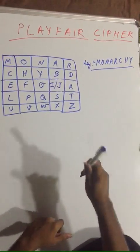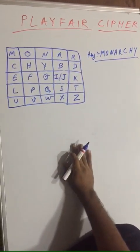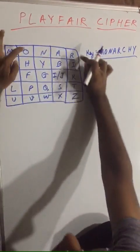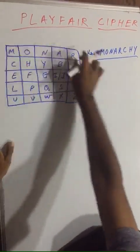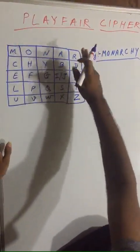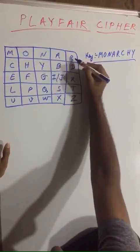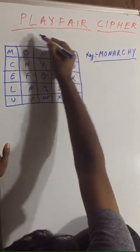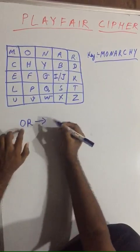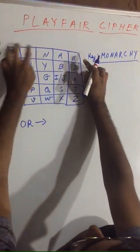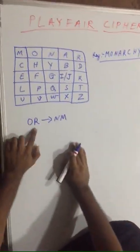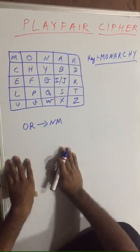Rule number four: if you are given a plaintext pair like O and R, check where they are in the matrix. O and R are in the same row. Whenever this situation arises, you just step to the next value in the row. For O the next value is N, and for R you wrap around back to M. So encrypting OR gives you NM.